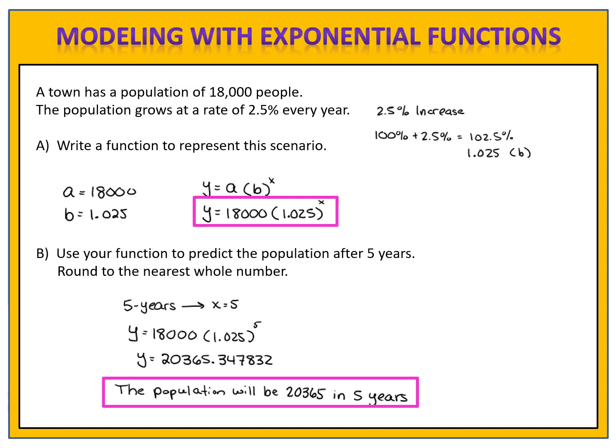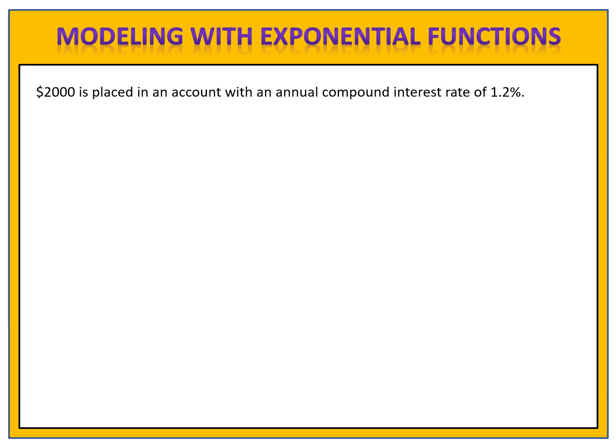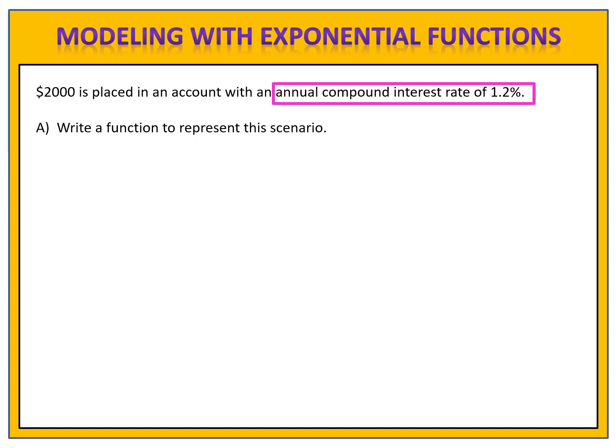I used an exponential function to write a model representing the population and its rate of growth in this town, and then used that model to predict what the population would be after 5 years. Here's another example: $2,000 is placed in an account with an annual compound interest rate of 1.2%. We want to write a function to represent this scenario. Since this is an exponential scenario, we'll use y equals a times b to the x, and we need to determine a and b.